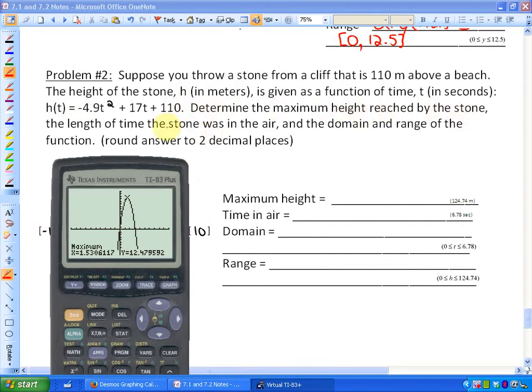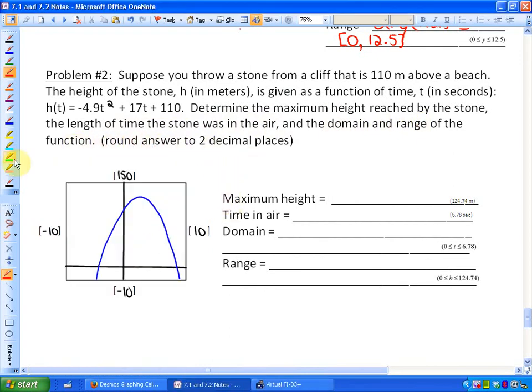Determine the maximum height reached by the stone, the length of time the stone is in the air, and the domain and range of the function. Round your answers to two decimal places. So what I'm going to do first of all is graph this highlighted in green function on my calculator.